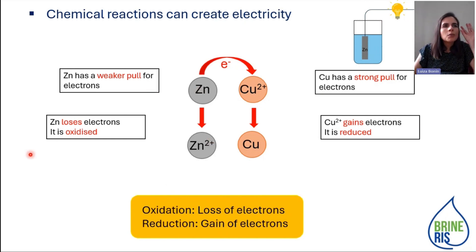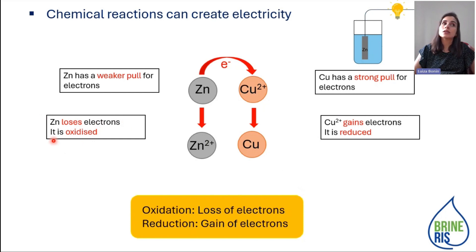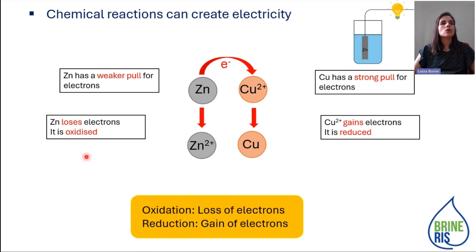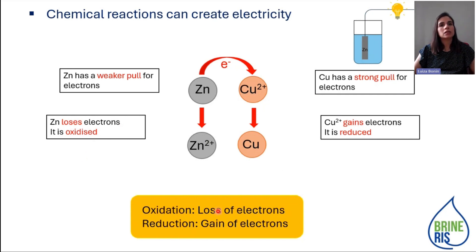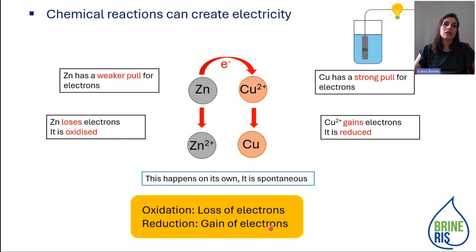So, just some important words here that you will hear a lot with my colleagues. Zinc loses electrons, so zinc is oxidized. And copper gains electrons, so I say that copper is reduced. These are the two most common electrochemical reactions: oxidation, that's the loss of electrons, and reduction, that's the gain of electrons. And this reaction between copper and zinc happens on its own — it's a spontaneous reaction.